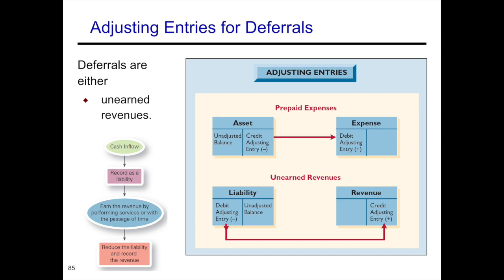For unearned revenues, remember the original entry when you recorded the unearned revenue was a liability. Unearned revenue is when you have received cash in advance of actually performing a service or providing a product. So when you adjust the fact that you have now earned that money, you would actually debit the liability and credit the revenue, showing that you have earned it.